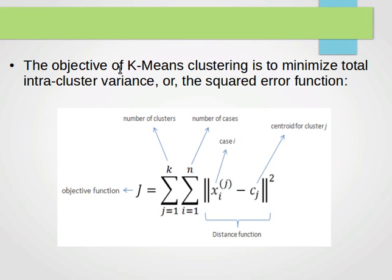The objective of k-means clustering is to minimize total intra-cluster variance, or the squared error function. The objective function J is the summation over the number of clusters and the number of cases or points. We find the squared differences for each case.